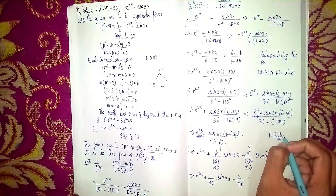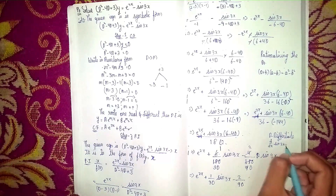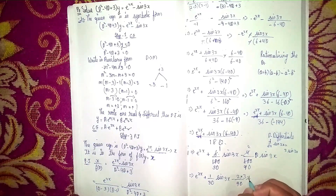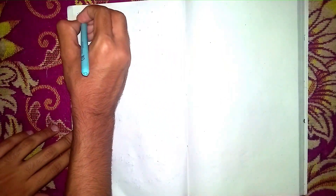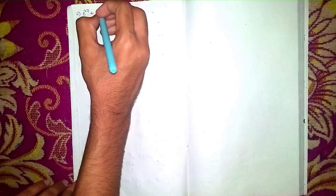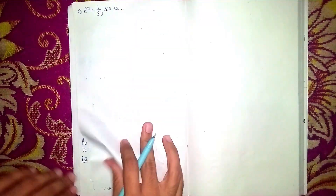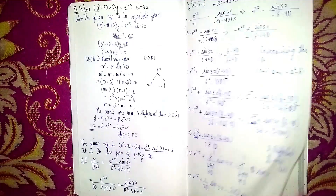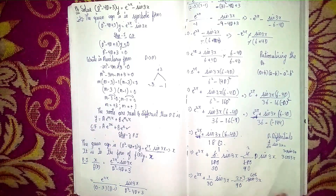Differentiating: d/dx of sin(3x) = 3cos(3x). So D·sin(3x) = 3cos(3x). Substituting: (2/90) × 3cos(3x) = 6cos(3x)/90 = (2/30)cos(3x). Therefore it becomes: minus e^(2x) plus (1/30)sin(3x) minus (2/30)cos(3x).